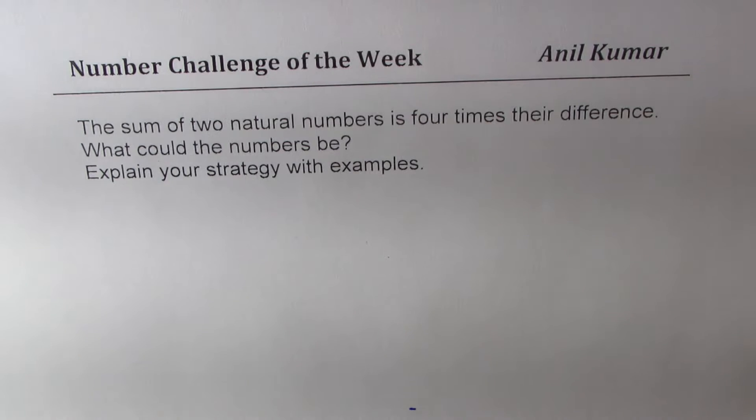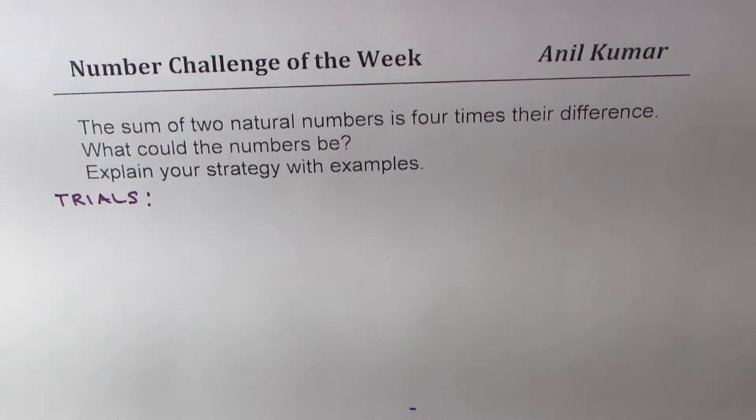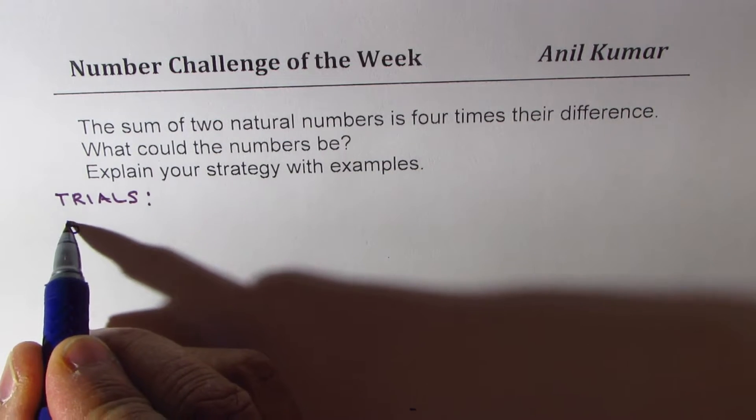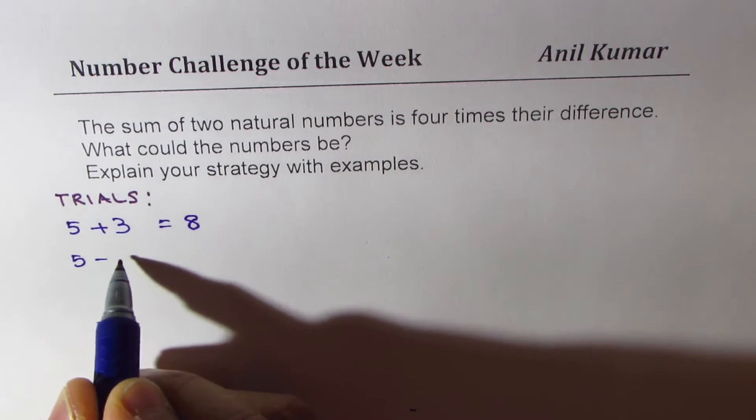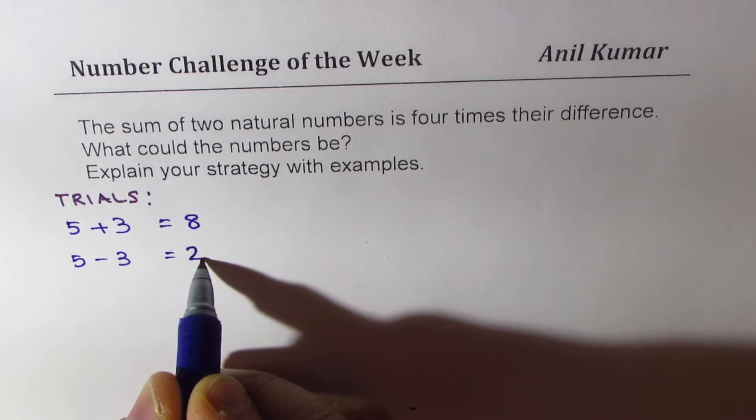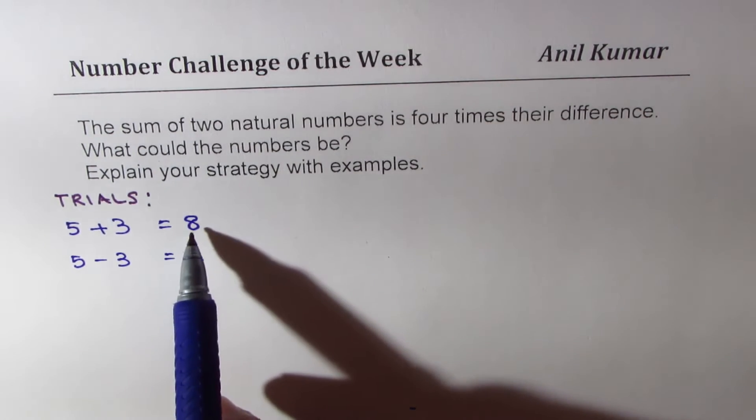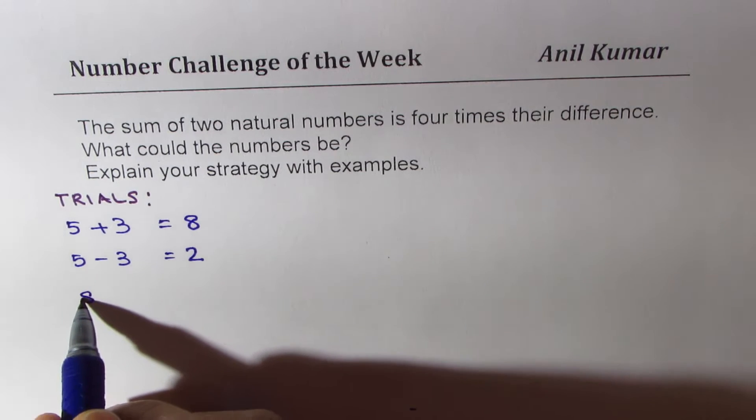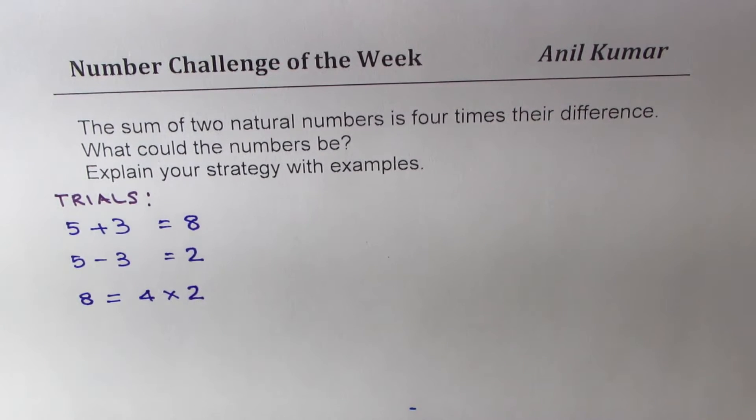One method is trial and run. We should do some trials. When we say sum of two numbers is four times difference, if I take numbers like five and three, if I add them I get eight. And if I do five minus three, I get two. These are perfect numbers whose sum eight is four times their difference. We know that eight equals four times two. So those are the kind of numbers we are looking for.